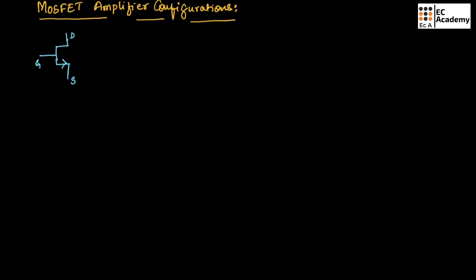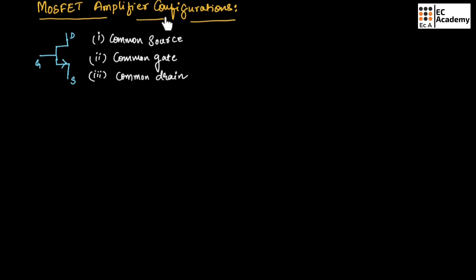There are three configurations in MOSFET: the first one is common source configuration, the second one is common gate configuration, and the third one is common drain configuration.